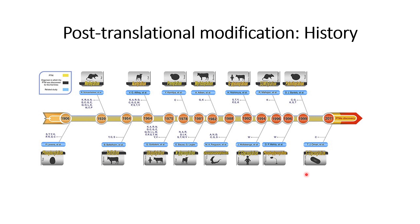One important takeaway from this overview is that N-glycosylation and O-glycosylation are among the most important glycosylation types within mammalian cells, as more than 50 percent of proteins with post-translational modification in mammalian cells carry N-glycosylation.